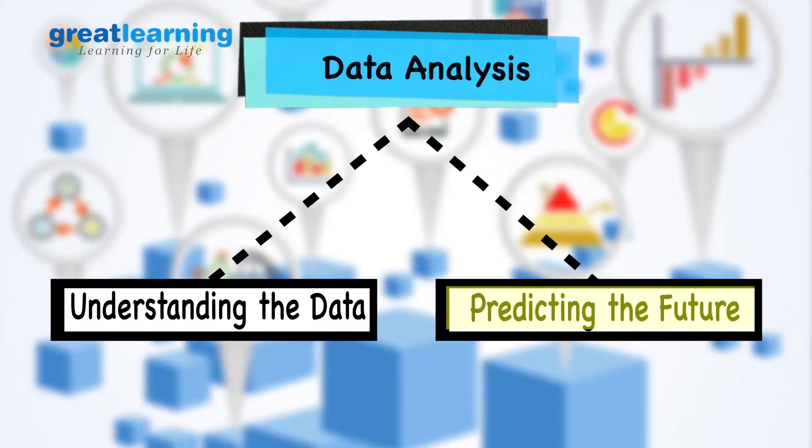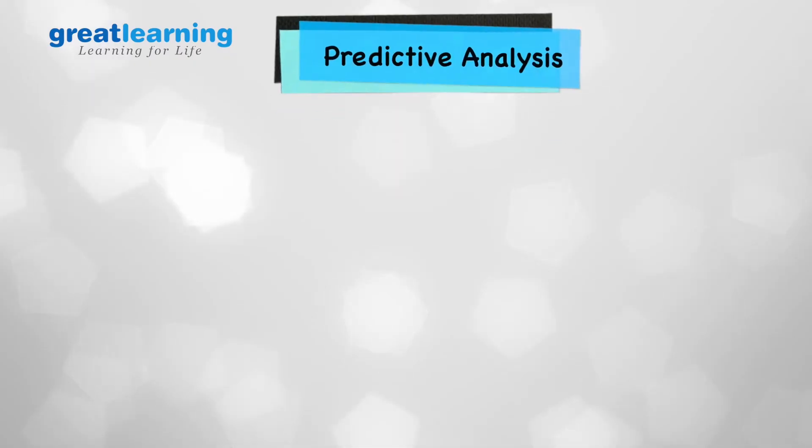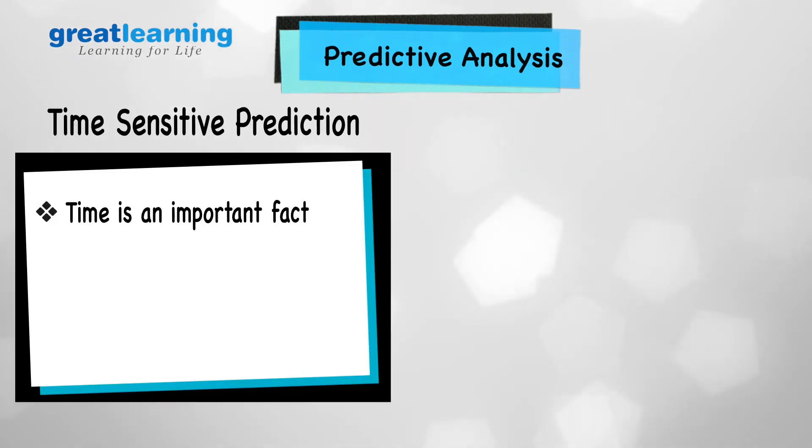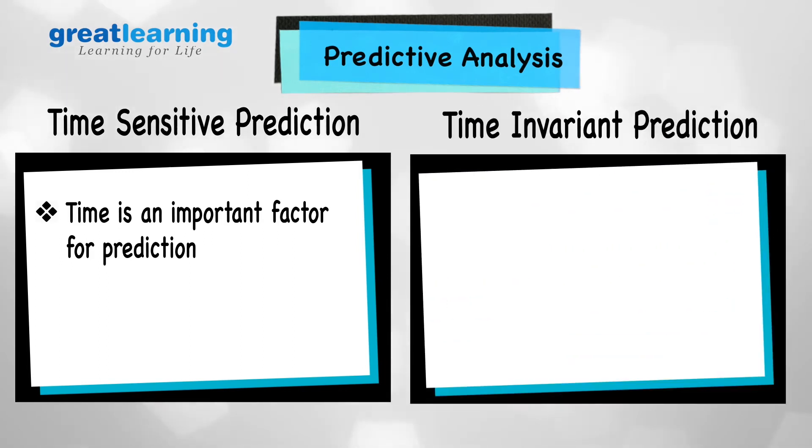When it comes to predicting the future, there are two strands which we should be wary of. One is the kind of prediction which is sensitive to time, typically time series analysis. The other kind of predictions are not sensitive to time, what we can call time invariant. What are the broad differences between the two?